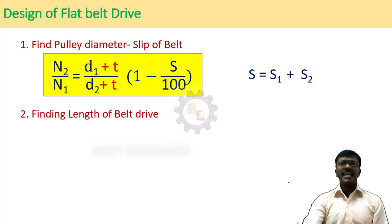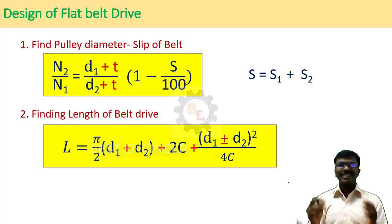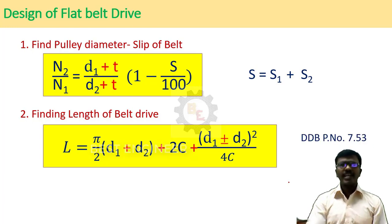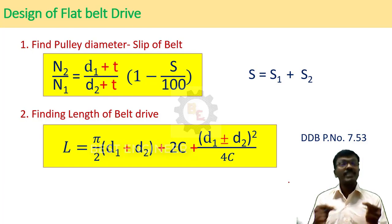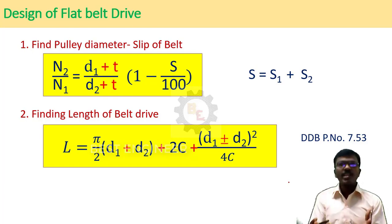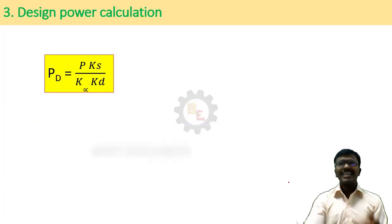Next, we have to find the length of the belt drive. This formula is available in the PSG Design Data Book, page number 7.53. This length is the actual length. The actual length should be shorter than the calculated length, because we have to provide initial tension — the actual length should be shorter than the calculated length to provide that initial tension.